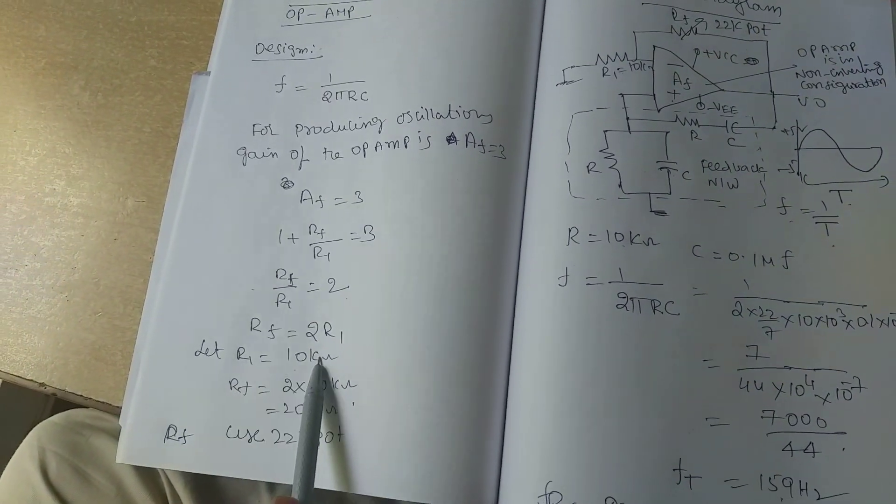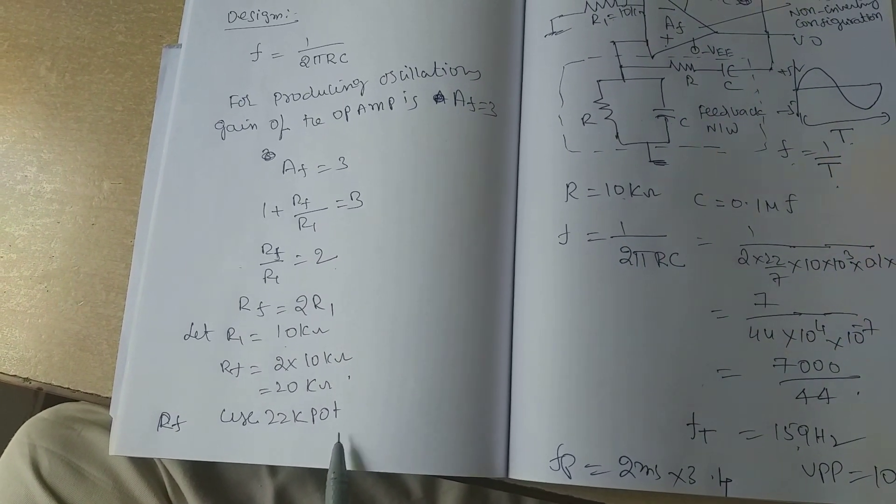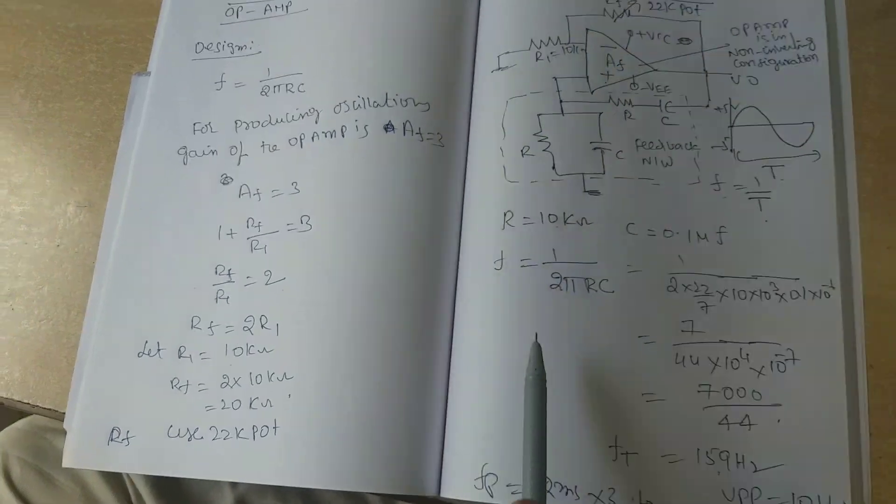R1 is equal to 10 kilo ohms. RF is equal to 20 kilo ohms. Use 22 kilo ohms potentiometer. This is the design.